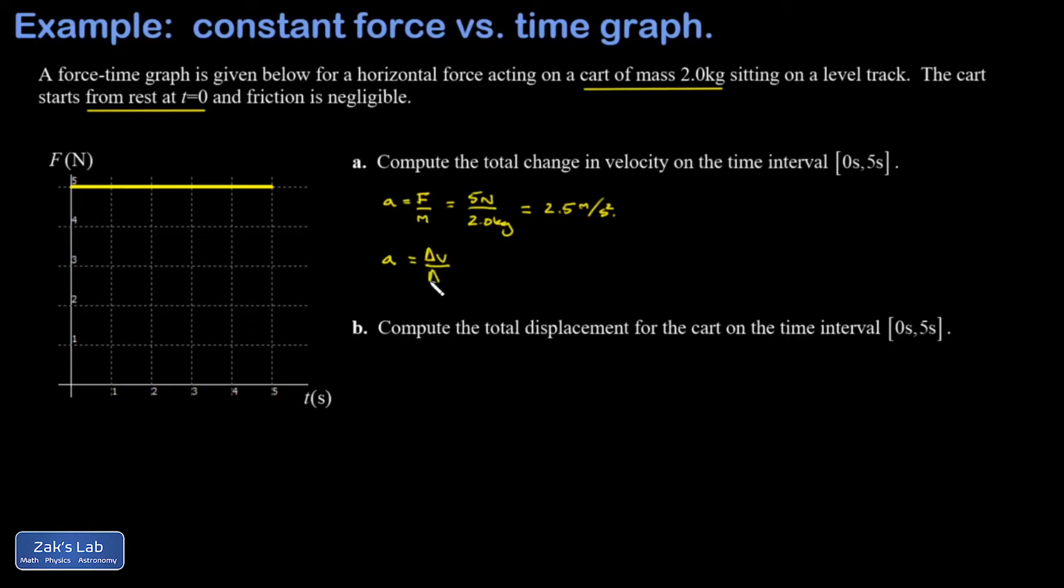This means my change in velocity is a times delta t, and delta t is five seconds here. So I have 2.5 meters per second squared times five seconds, and I get a total change in velocity of 12.5 meters per second.